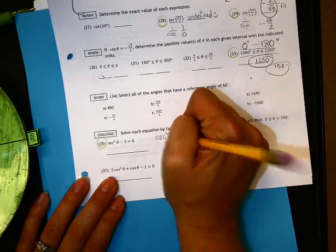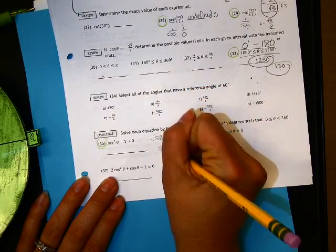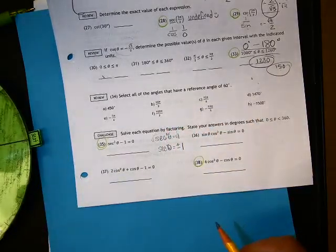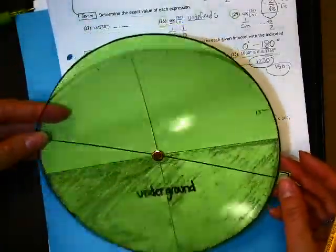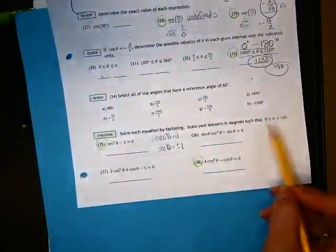Secant squared theta equals 1. And when I square root that, I get secant of theta is equal to plus or minus 1. So remember, secant goes with cosine. Cosine is equal to 1 here. What do I want? Degrees.